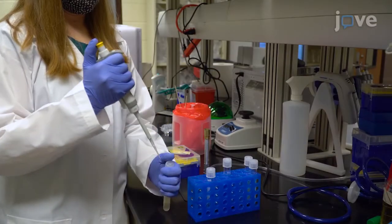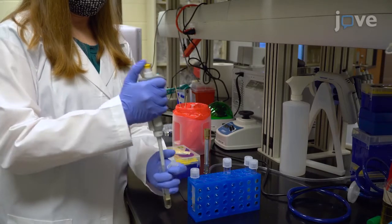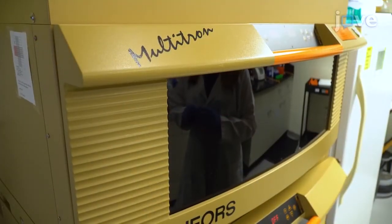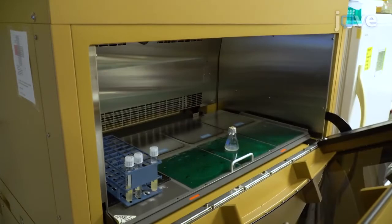Dilute 500 microliters of the culture in five milliliters of fresh LB broth and incubate the bacterial suspension at 37 degrees Celsius and 250 revolutions per minute for 60 to 90 minutes.